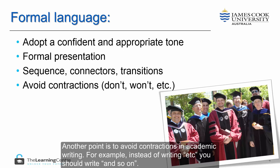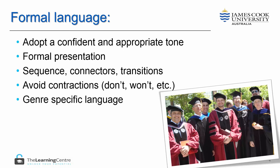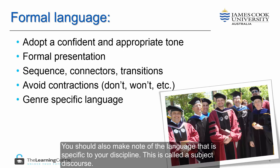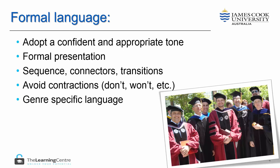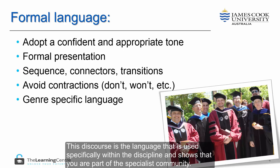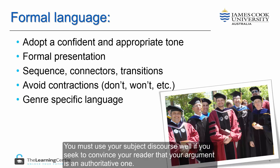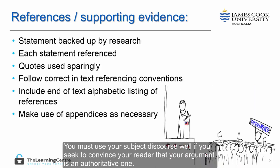Another point is to avoid contractions in academic writing. For example, instead of writing 'etc.', you should write 'and so on.' You should also make note of the language that is specific to your discipline — this is called a subject discourse. This discourse is the language used specifically within the discipline and shows that you are part of the specialist community. You must use your subject discourse well if you seek to convince your reader that your argument is an authoritative one.